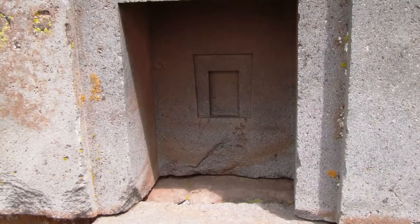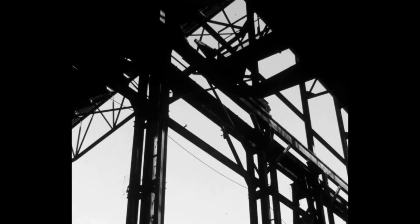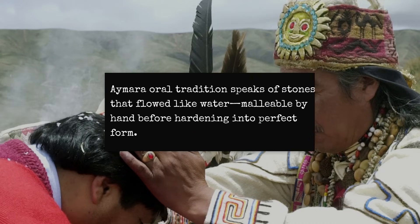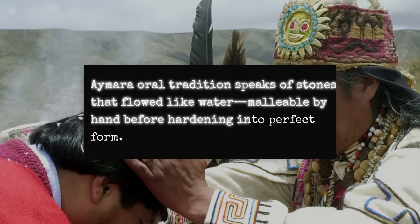How did builders achieve such crisp right angles and uniform slots, working with nothing more than hammer stones and bronze chisels, or so the official story goes? Some point to the Aymara oral tradition which tells of stones that flowed like water, soft enough to be shaped by hand before hardening into their final form.